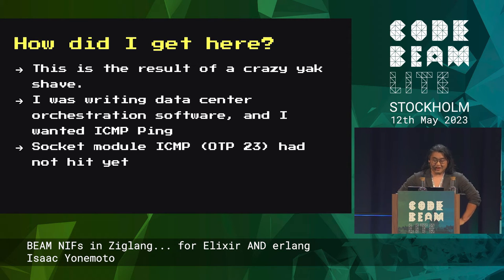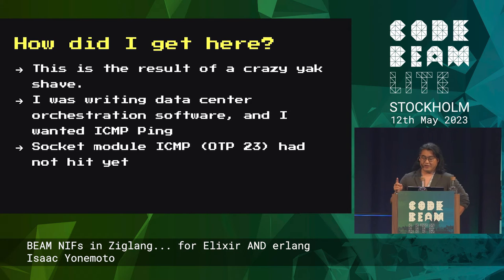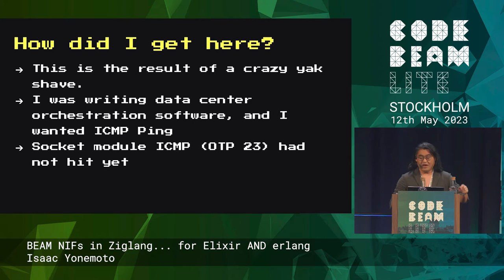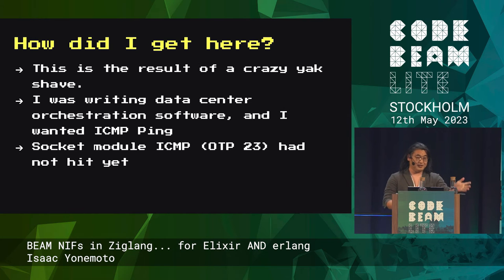The socket module only hit in OTP 22. And if I recall correctly, ICMP came in on OTP 23. And it hadn't hit yet. So what was I doing? I was shelling out to fping or ping.